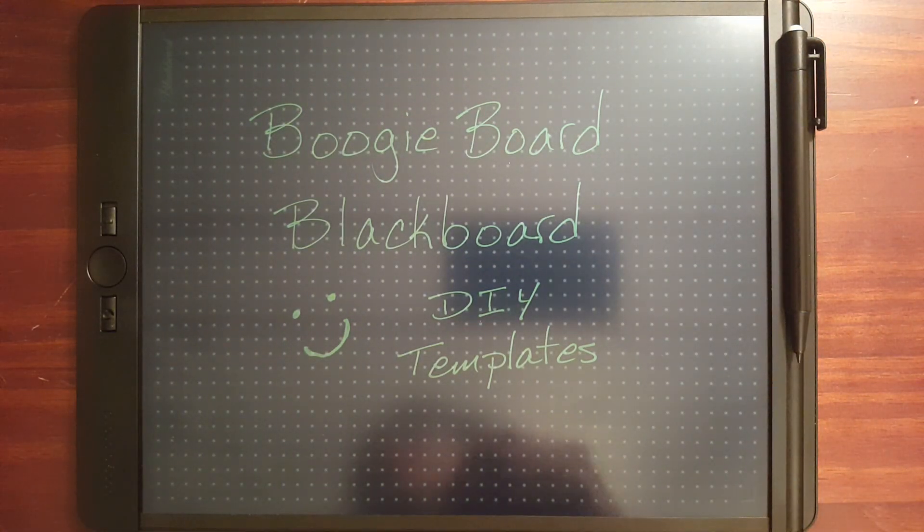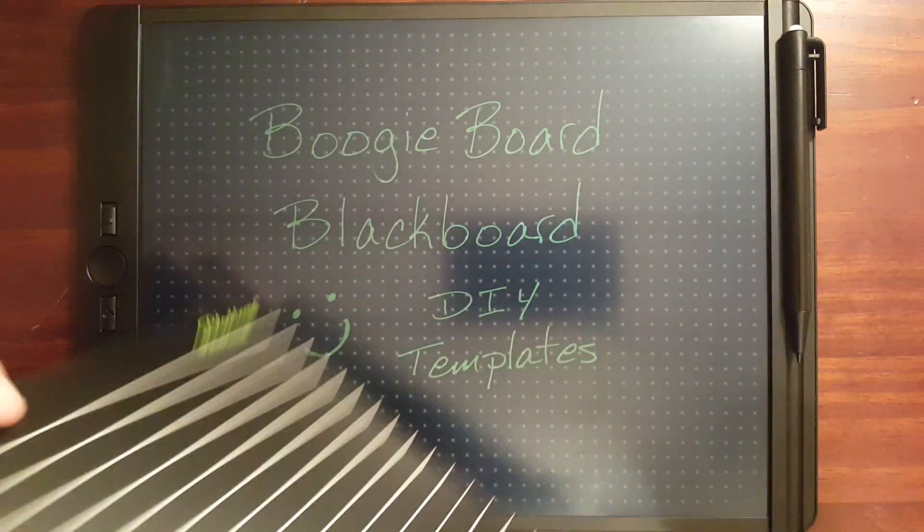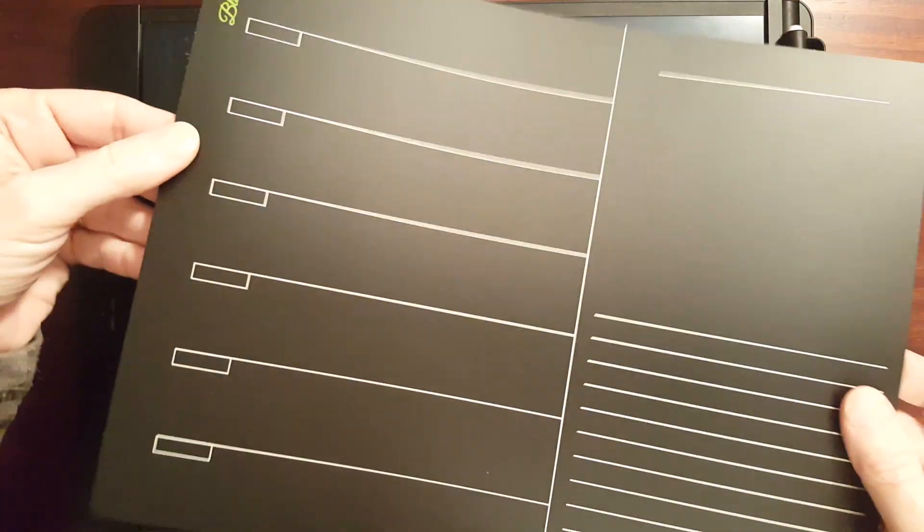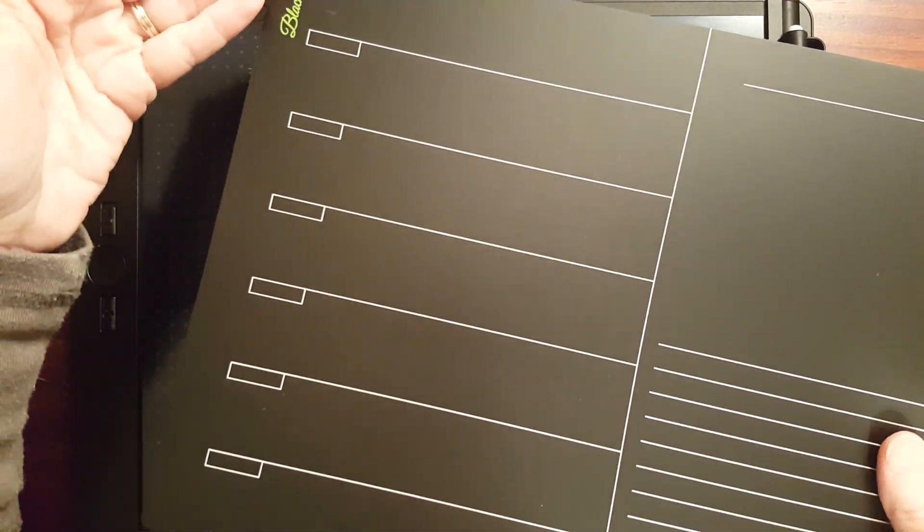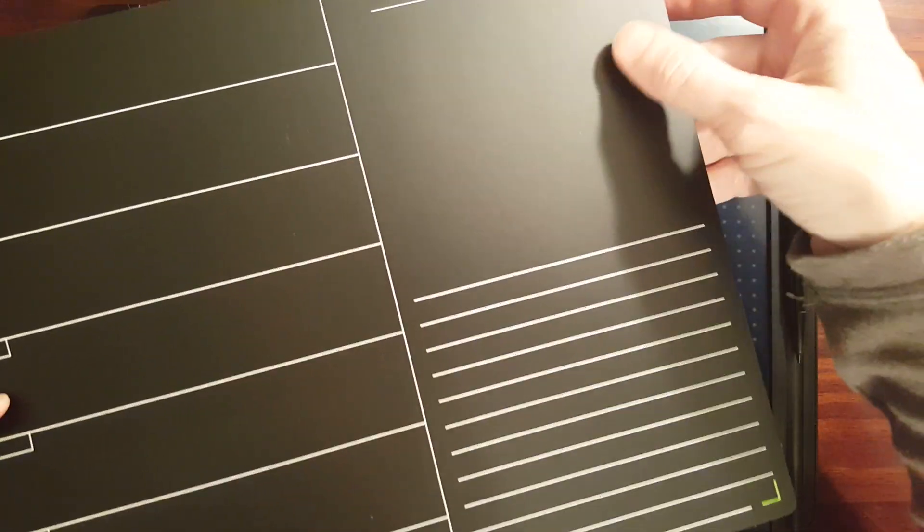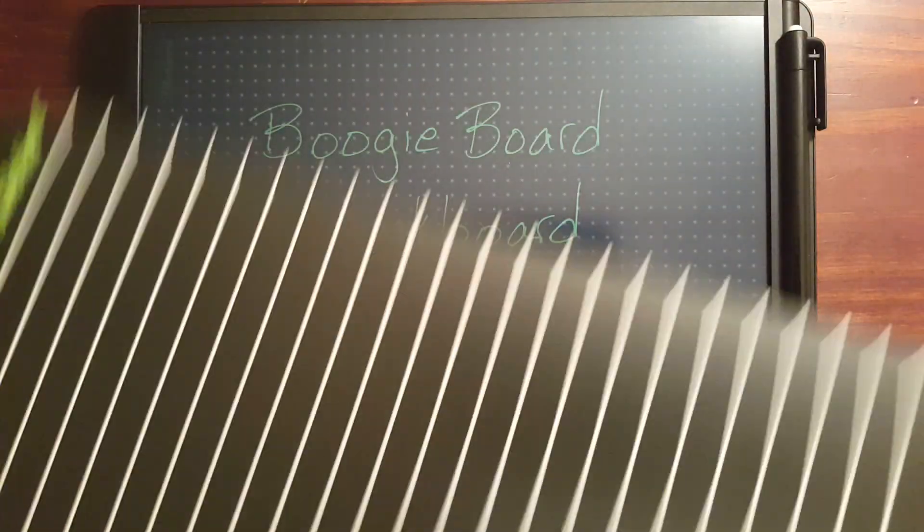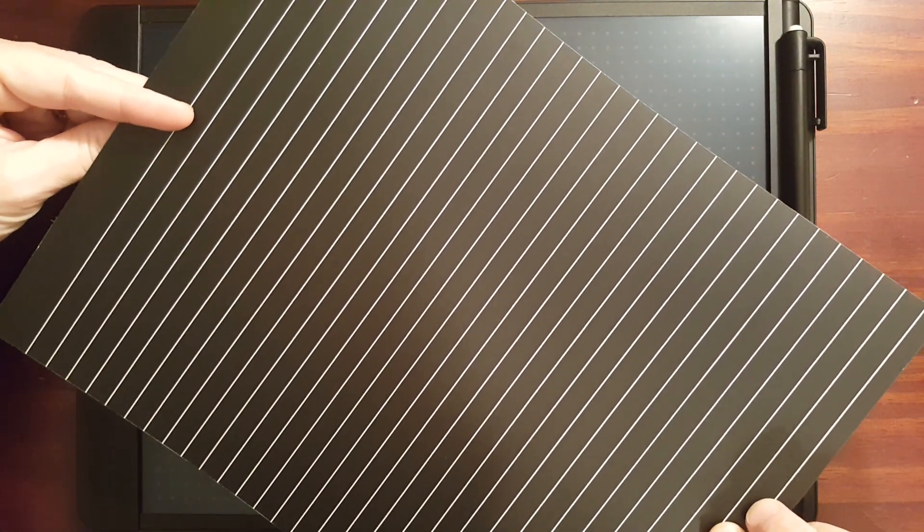Now, the Boogie Board comes with two sheets that are double-sided. This template has a weekly schedule and a to-do list. The other side is just plain lines.